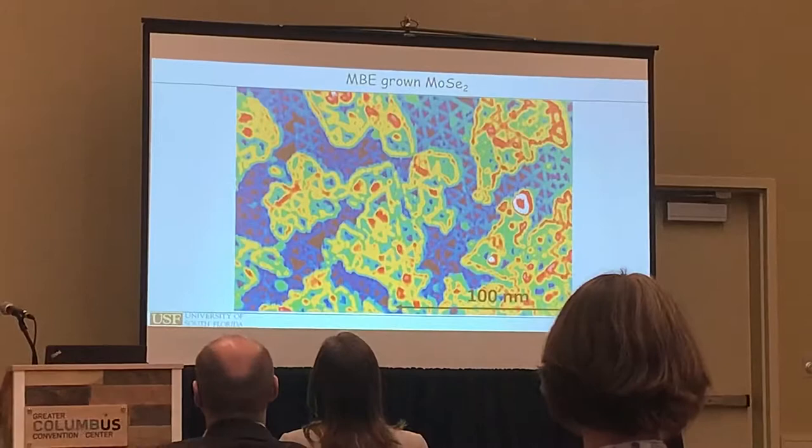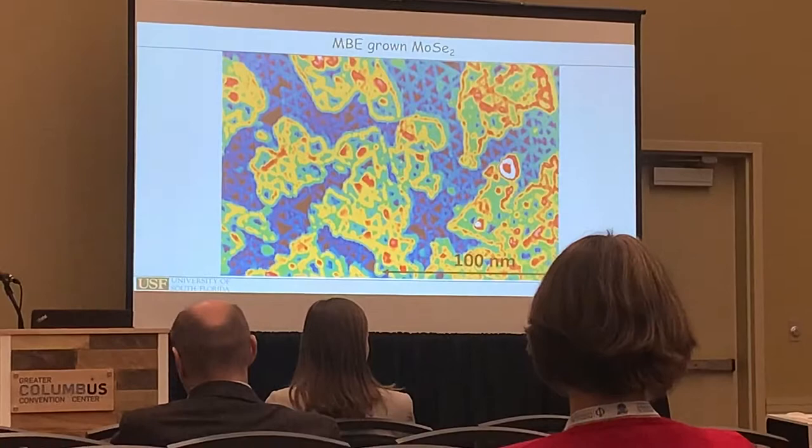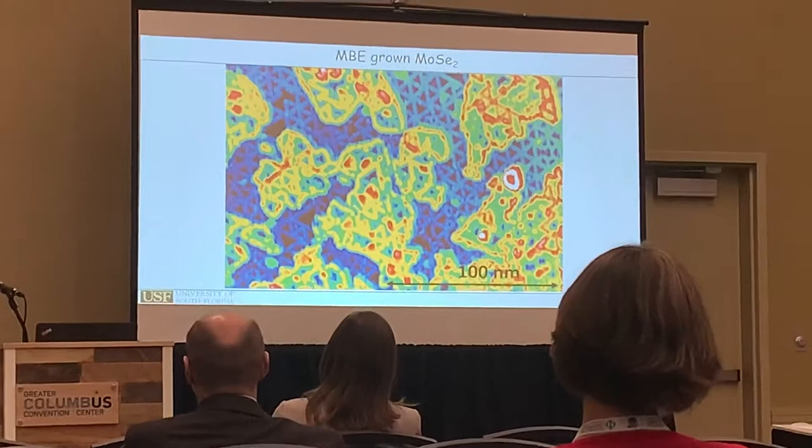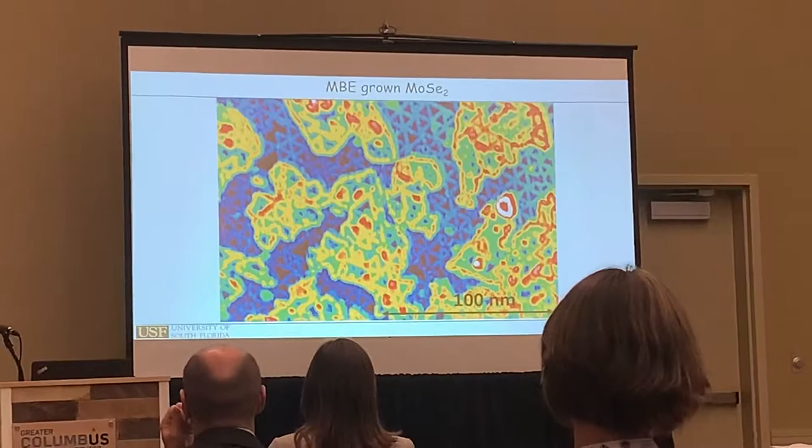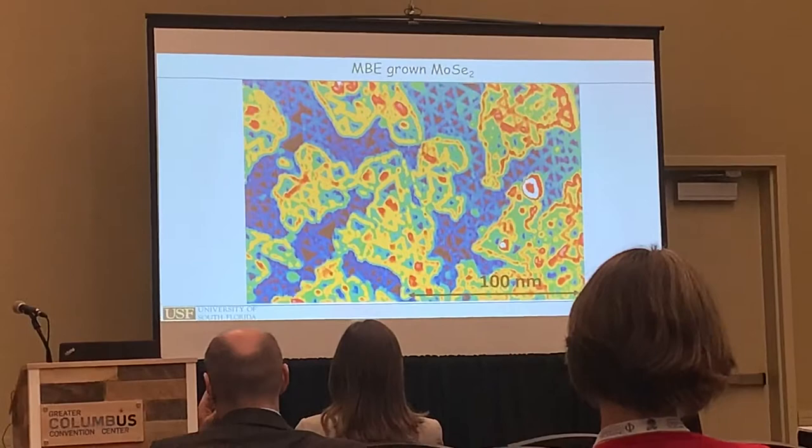In transition metal dichalcogenides, you can get a very high density of these mirror twin grain boundaries, and therefore modify the properties of those. For example, if you grow molybdenum diselenide with molecular beam epitaxy as just a monolayer, you get this cross-hedge structure, which consists entirely of twin grain boundaries, with a separation of something like 10 nanometres — so you have a very high density of those.